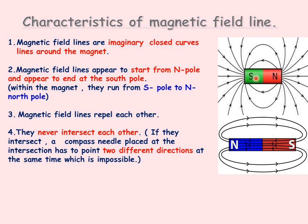Inside the magnet, the magnetic field lines start from the south pole and end at the north pole. Externally, they emerge from the north pole and end at the south pole, but to complete the cycle inside the magnet, they go from south to north.